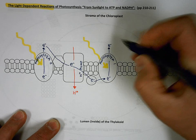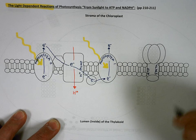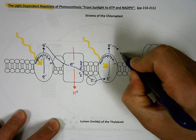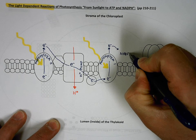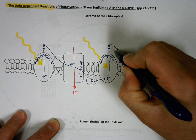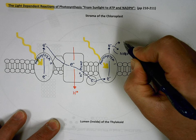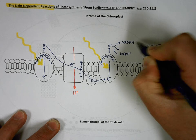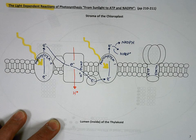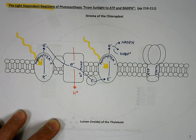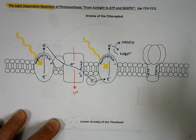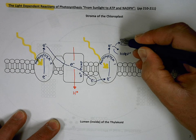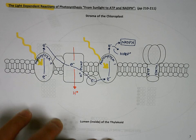It's picked up then in the stroma by NADP and when it is NADP becomes NADPH, meaning it is now carrying that electron. We'll put a little box around it to indicate that that's important to remember.